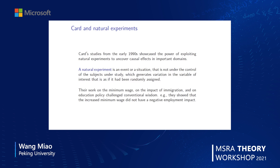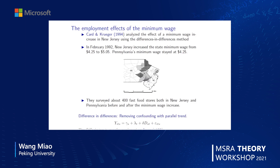Card's work on minimum wage, the impact of immigration, and education policy challenged the conventional wisdom in economics. For example, they showed that an increased minimum wage will not reduce employment. In February 1992, New Jersey increased the state minimum wage, but the neighboring state Pennsylvania did not — this is a natural experiment. It is a macro policy not under control of any investigator or individual. Card and colleagues surveyed about 400 fast food stores in both New Jersey and Pennsylvania before and after the minimum wage increase, and applied the difference-in-differences method to infer the causal effect of minimum wage.